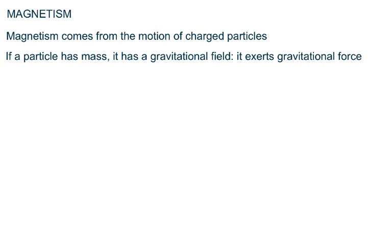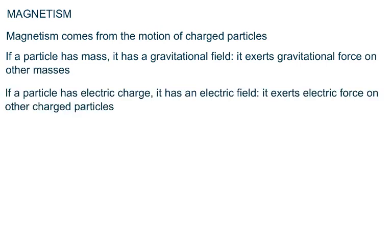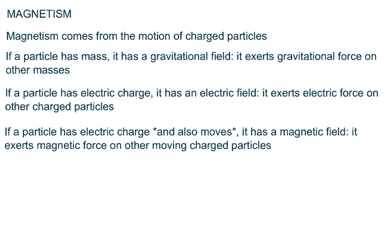If you have a particle with mass, it has a gravitational field and exerts gravitational force. If you also give it an electric charge, it has an electric field and exerts an electric force on other charged particles. Now if you take that charged particle and move it, it also has a magnetic field and exerts a magnetic force on other moving charged particles.